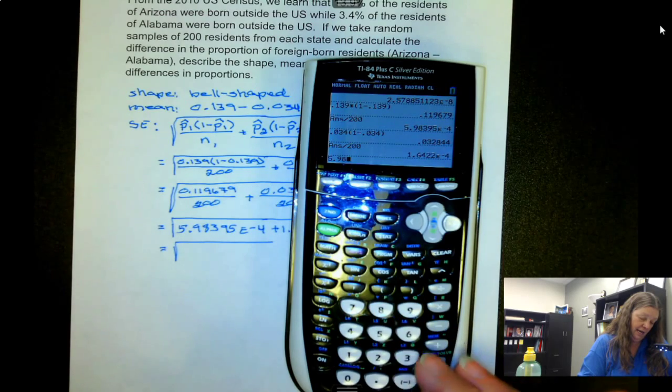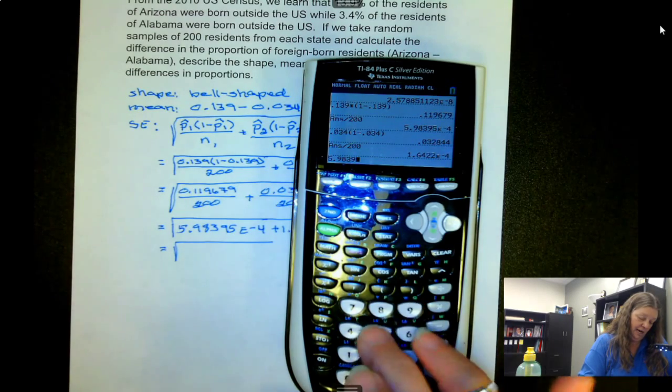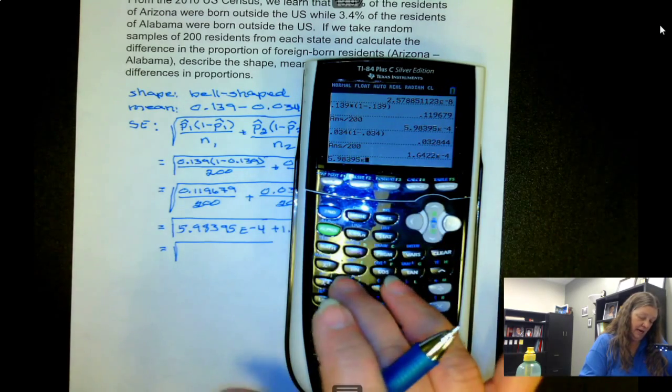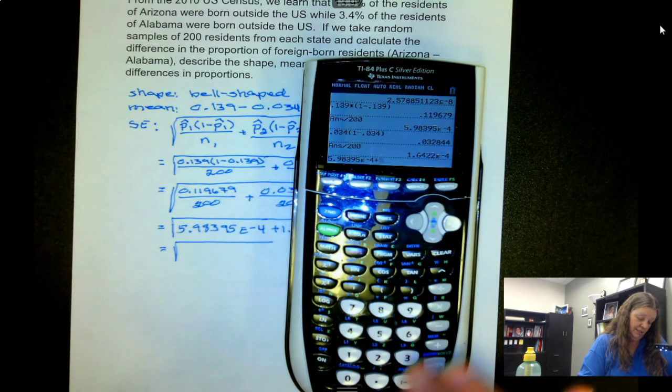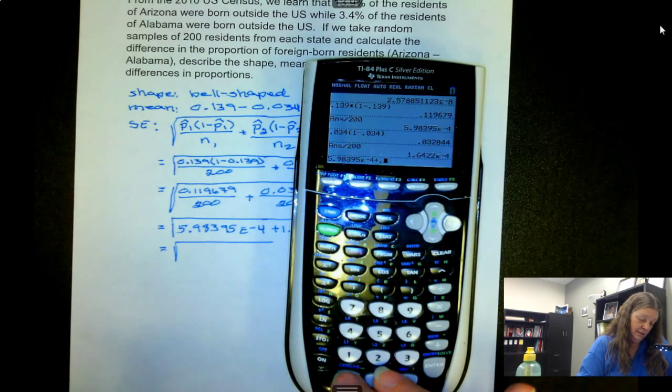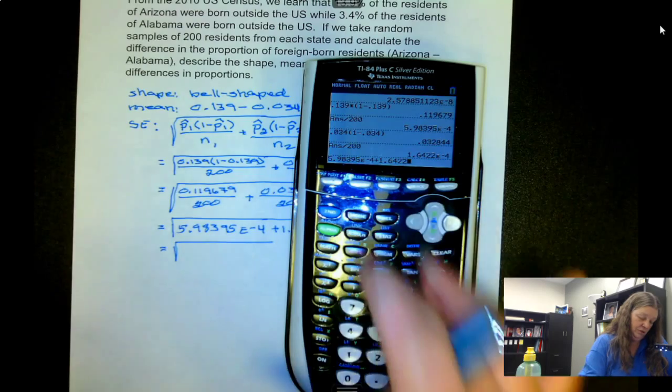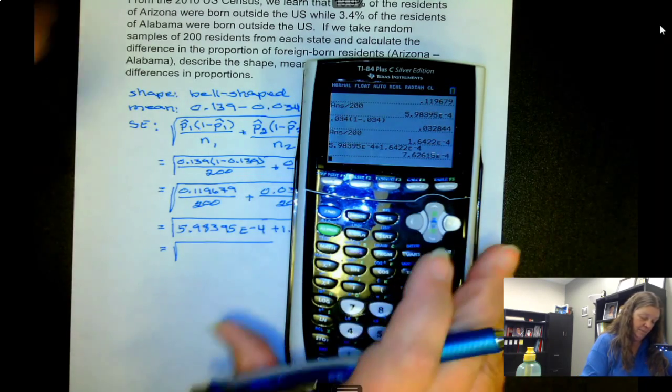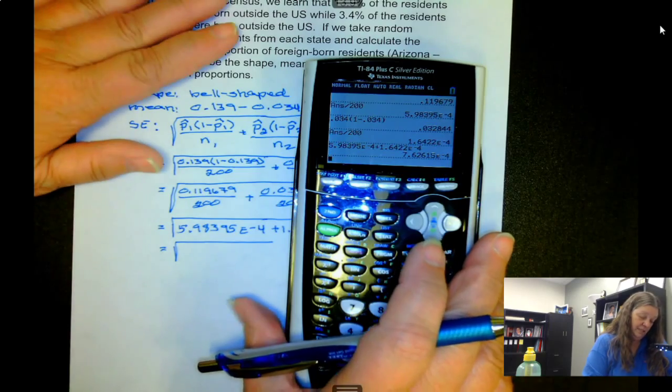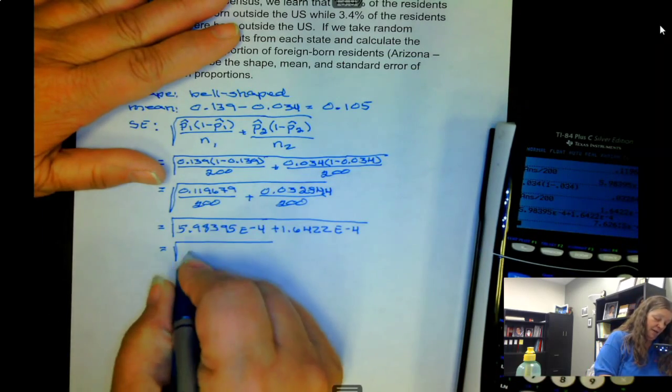Second comma e-4, so we have 7.62615e-4.